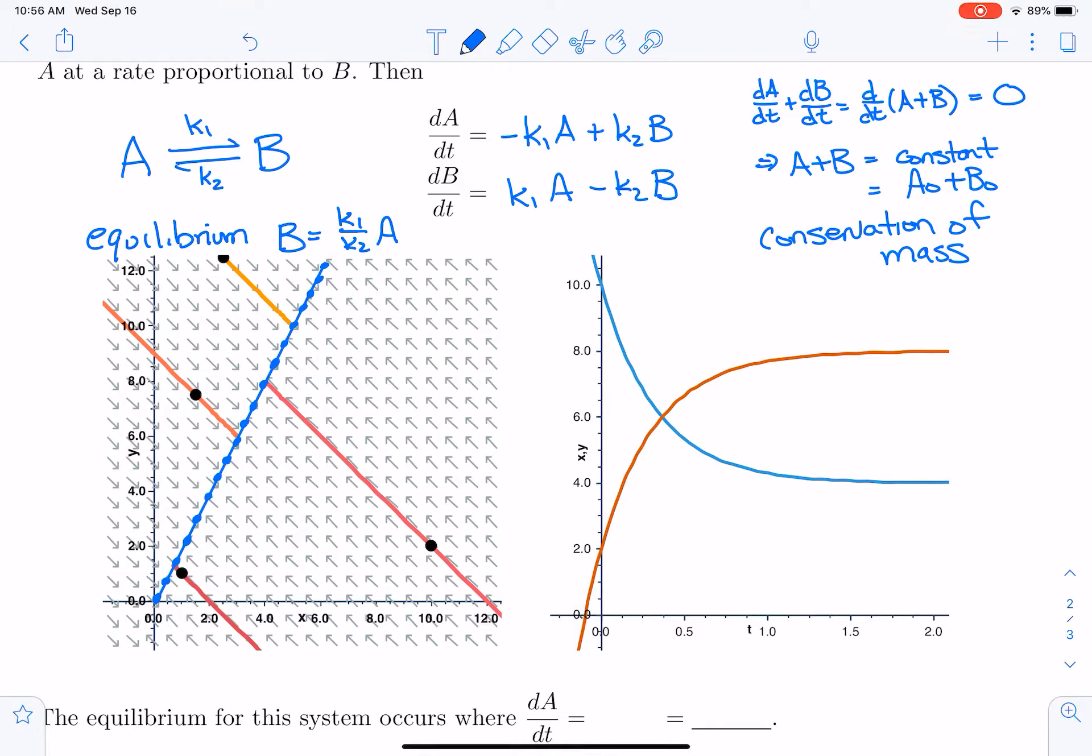And so, unlike the previous example, the equilibrium that this system approaches depends on the initial conditions. It depends on how much of chemical A and B we had to begin with.